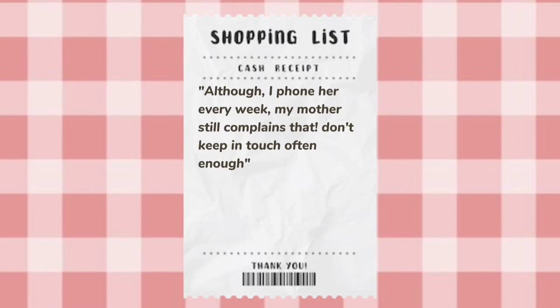Cataphoric reference is the opposite of anaphoric reference. It occurs when a pronoun, word, or phrase is mentioned after the first sentence. For example: 'Although I phone her every week, my mother still complains that I don't keep in touch often enough.' Here, 'her' refers to 'my mother,' and the explanation from 'my mother' comes after the first sentence. So this position is called cataphoric reference. In summary, if the explanation is at the beginning, it is anaphoric; but if the explanation is at the end, it is cataphoric.